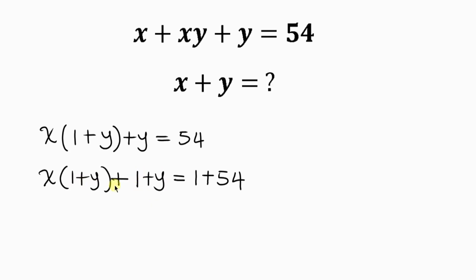So 1 plus y is common. I'm going to be factoring out 1 plus y. Now open brackets. x times 1 plus y divided by 1 plus y is x, plus 1 plus y divided by 1 plus y is 1, and this is equal to 1 plus 54 is 55.